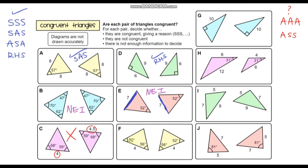For question F, we've got two 52 degree angles, two 56 degree angles, and the side length in between those two angles is also the same. So we can use ASA — angle, side length, angle. These two triangles are definitely congruent through ASA.